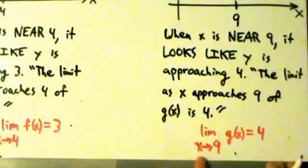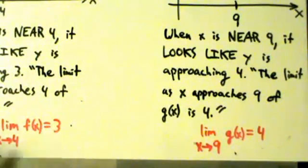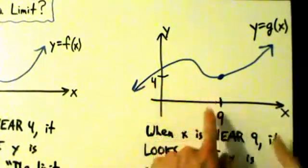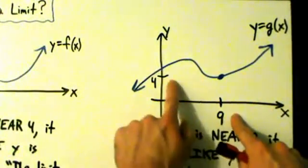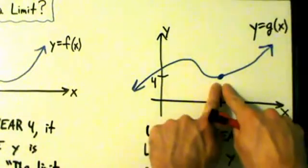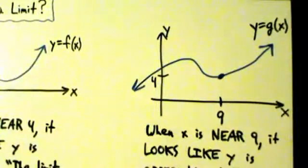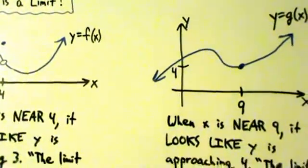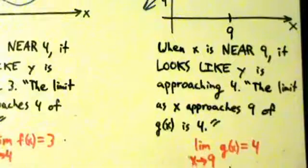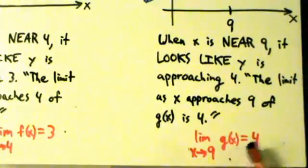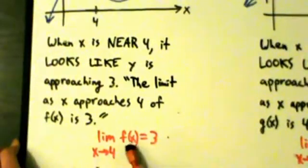Let's look at the graph one more time. We see that when x gets closer and closer to 9 from either the left or the right, y is getting closer and closer to 4. And yes, y actually is 4 when x is 9, but it doesn't matter for the limit. What's important to remember is that a limit, informally speaking, just tells you how a function behaves near a certain point and not necessarily at the point. Whatever is happening at the point might agree with the limit — like it does here — or it might be different from the limit, like in the first example.